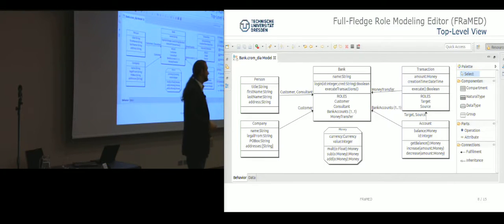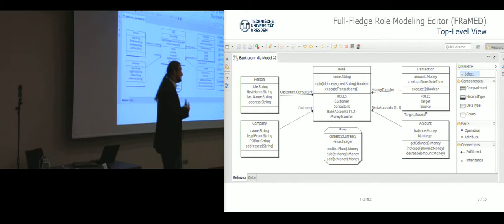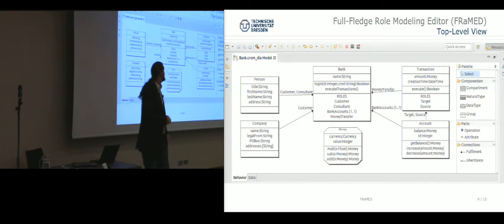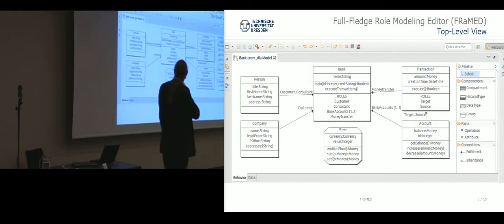To model this, the graphical representation was tailored for lightweight examples. For a modeling editor you need to make some adjustments to the language. So now we have two levels of the language. On the first level, on the top level, you specify natural types—you have persons for instance, companies—and also compartment types. And then you specify which natural type can play which role in which compartment type.